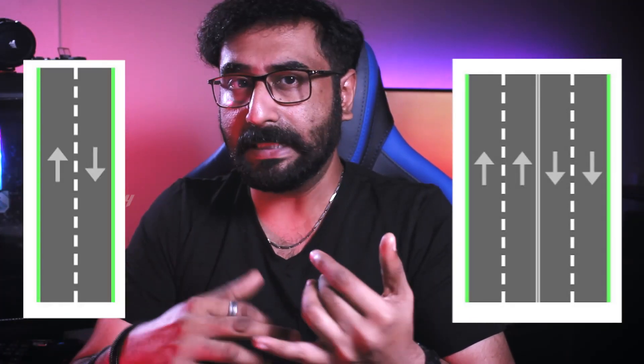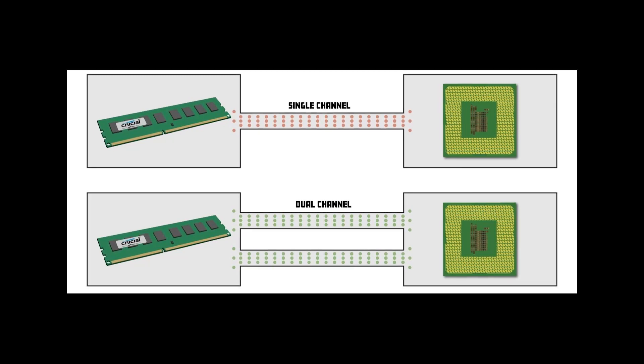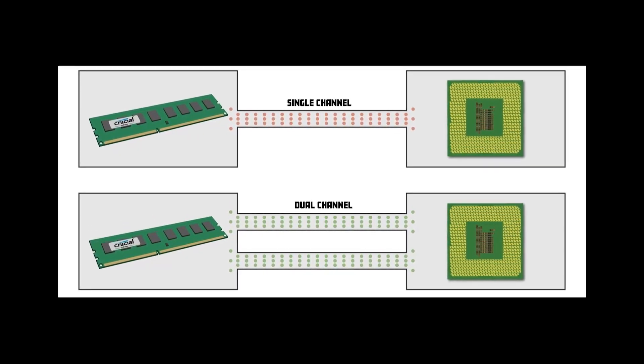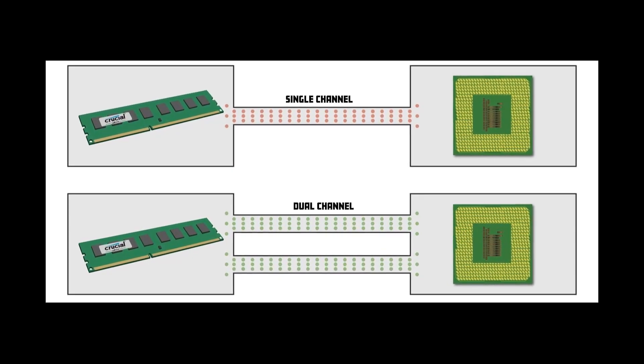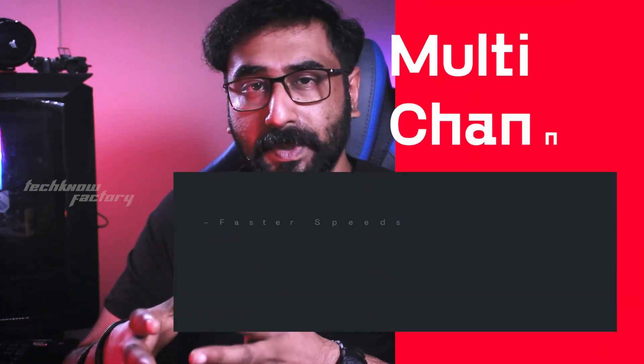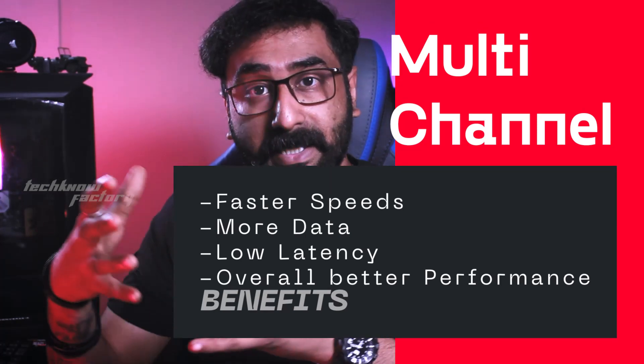To explain simply, we compare single channel and dual channel using a road analogy. Single channel is like transporting goods on a single road. Dual channel is like having a parallel road alongside — two lanes. When we use two RAM sticks, we can use two separate lanes and transfer data simultaneously.